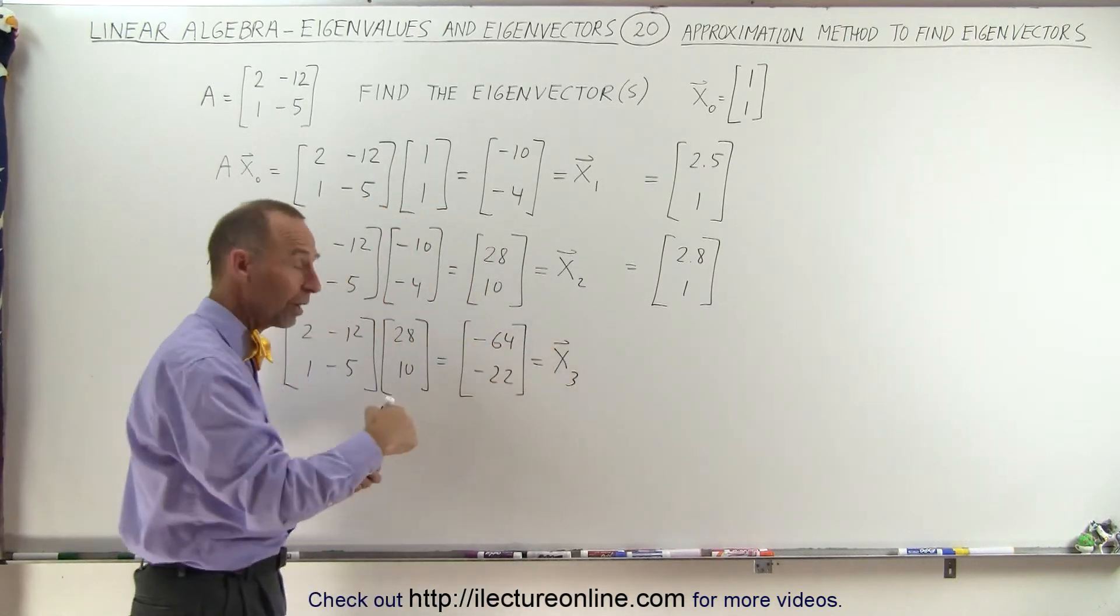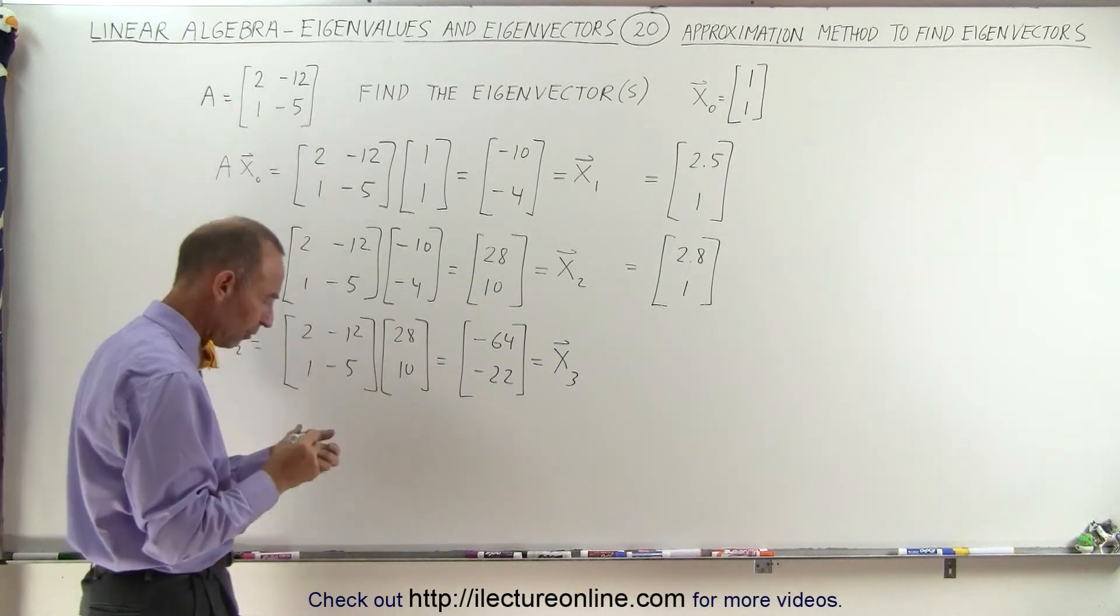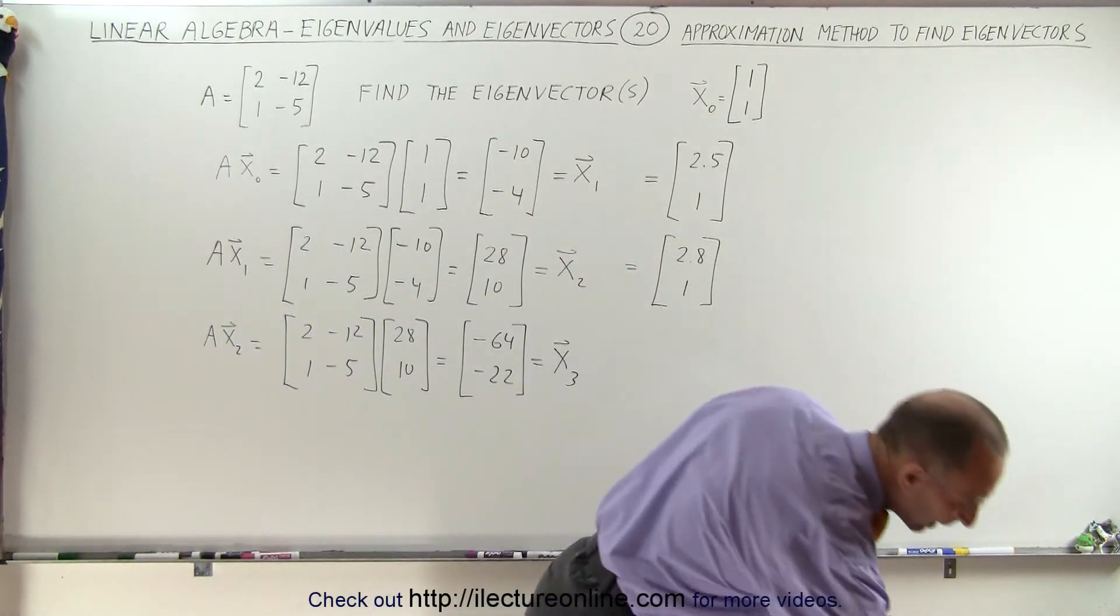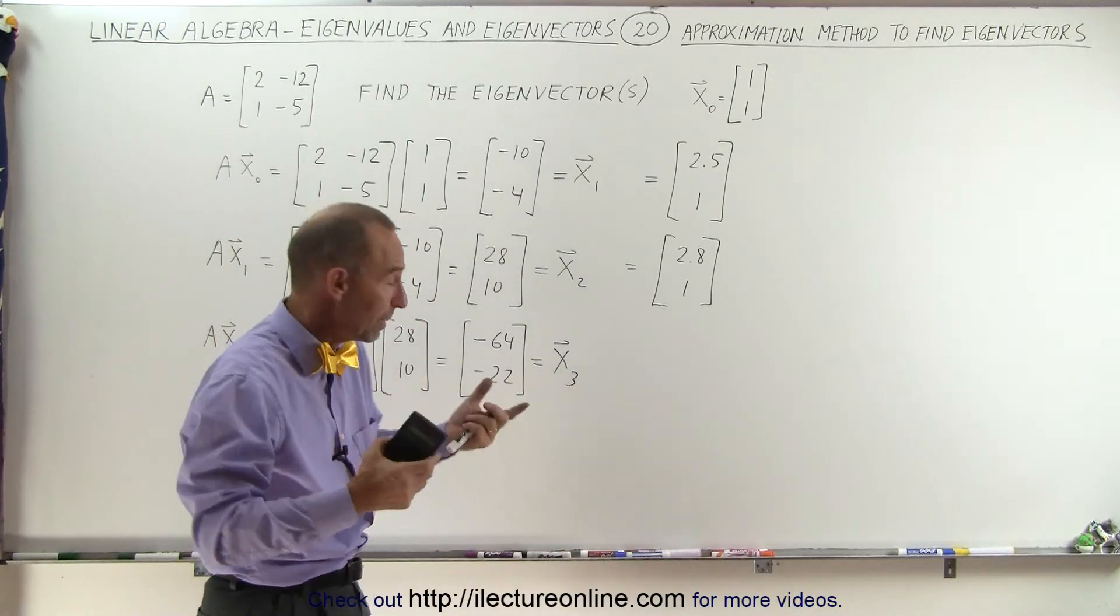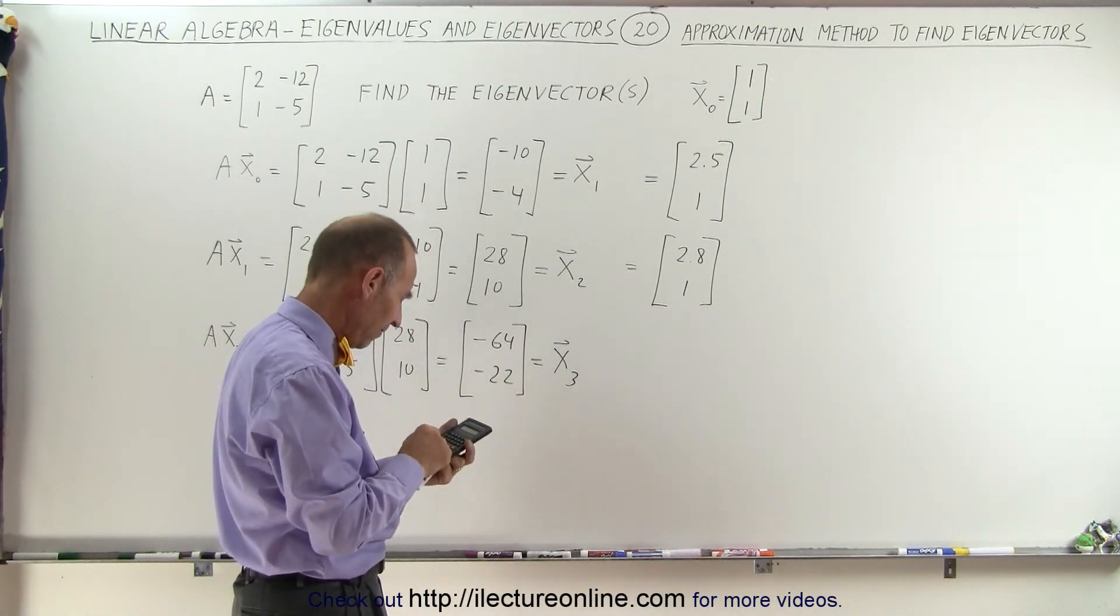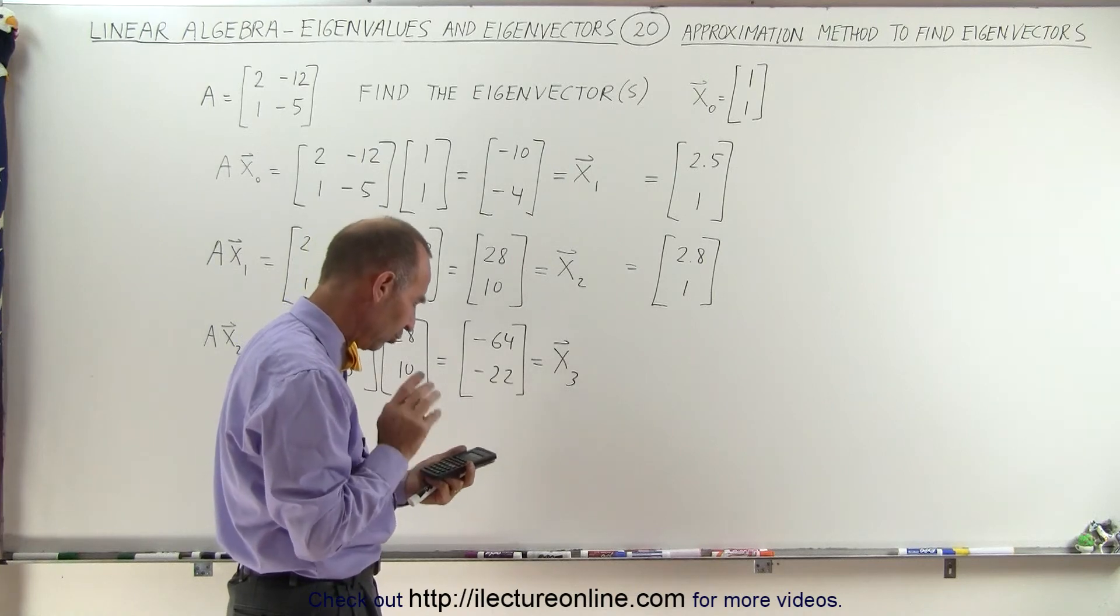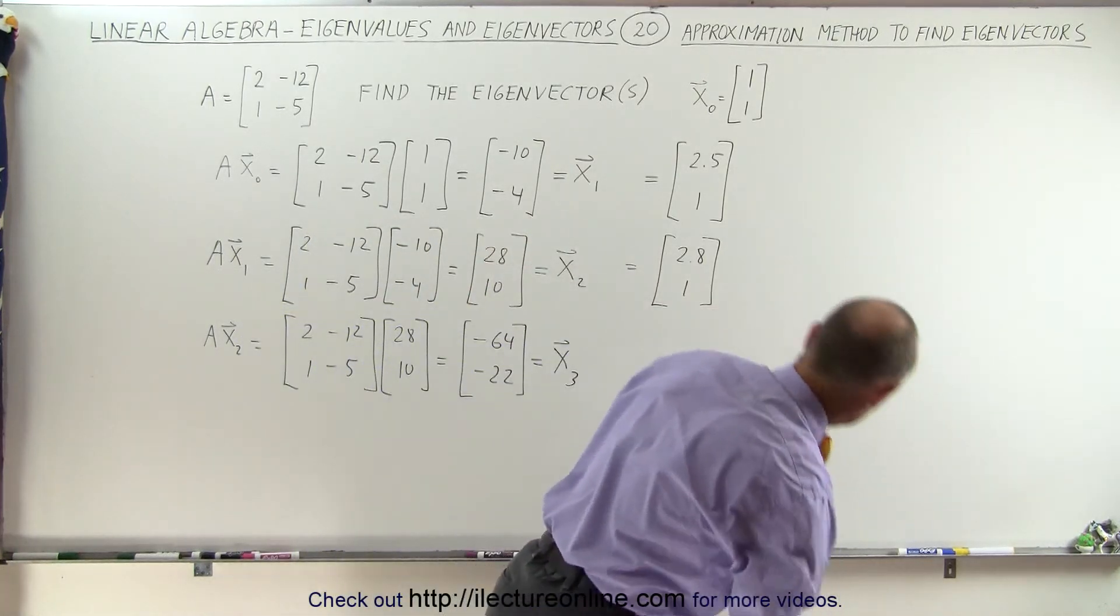But now the ratio, and again, it doesn't matter if it's negative, we can multiply the top and bottom by negative 1 and make it positive. But 64 divided by 22 is 2.91 to 1.